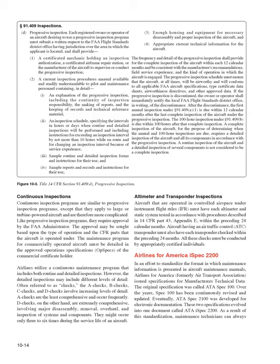Continuous inspections: Continuous inspection programs are similar to progressive inspection programs, except they apply to large or turbine-powered aircraft and are more complicated. Like progressive programs, they require approval by the FAA administrator. The maintenance program for commercially operated aircraft must be detailed in the approved operation specifications (ops specs) of the commercial certificate holder. Airlines utilize continuous maintenance programs including both routine and detailed inspections. Often referred to as checks, the A, B, C, and D checks involve increasing levels of detail. A checks are the least comprehensive and occur frequently. D checks are extremely comprehensive, involving major disassembly, overhaul, and inspection of systems and components, and might occur only three to six times during the service life of an aircraft.